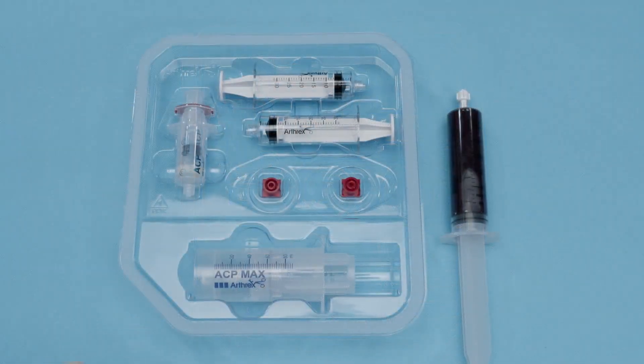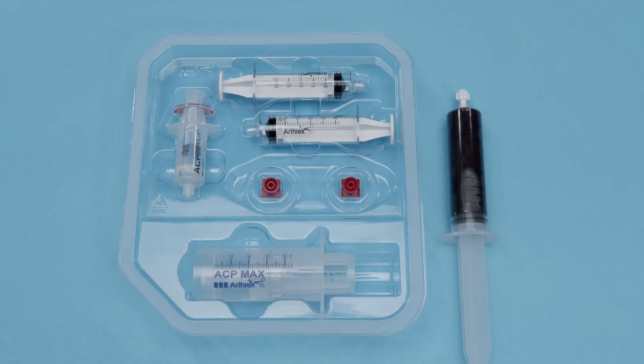Once you have your peripheral blood drawn, before you draw the peripheral blood, you're going to want to put four cc's of ACDA for every 30 cc's of peripheral blood you plan to draw. If you're using a 30 cc syringe, you draw up four cc's of ACDA. If you're using a larger syringe, such as a 60 cc syringe, you're going to want to draw eight cc's of ACDA prior to your peripheral blood draw.